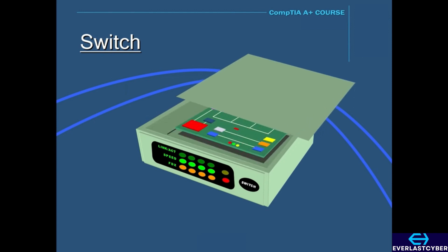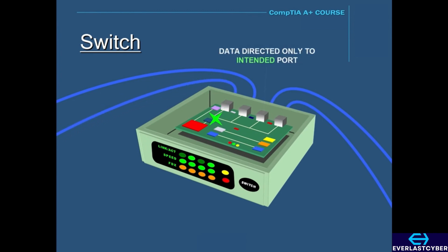A switch can learn the physical addresses of the devices that are connected to it, and it stores these addresses in a table. So when a data packet is sent to a switch, it is directed only to the intended destination port.